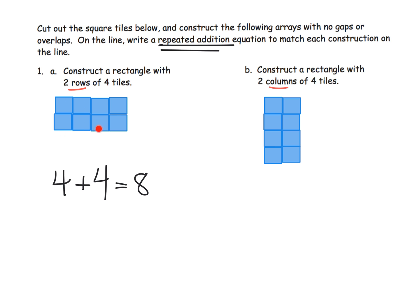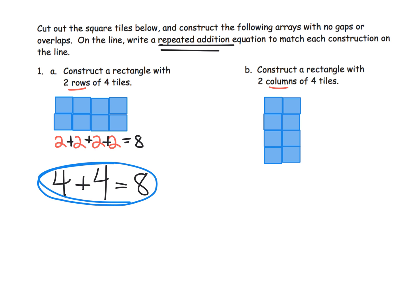Some students might say 'I see columns' and write two plus two plus two plus two — and that is a perfectly fine repeated addition as well. There is nothing inherently wrong with that. At this point, I think it's important that they read the words and build the correct rectangle, but when it comes to the repeated addition, either approach works, although Eureka Math is leading us to the rows-first interpretation.